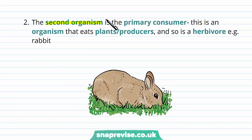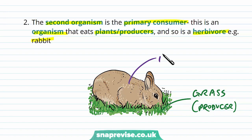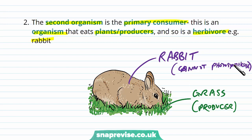The second organism, the one that eats the producer, is the primary consumer. This is an organism which eats plants or producers, so we call it a herbivore — for example the rabbit. The grass, which is the producer, has made its own food and stored it as energy inside its grass blades. The rabbit comes along, and since it cannot photosynthesize, it has to gain its food from eating other things. So the rabbit eats the grass, and we call it a herbivore, also known as the primary consumer.